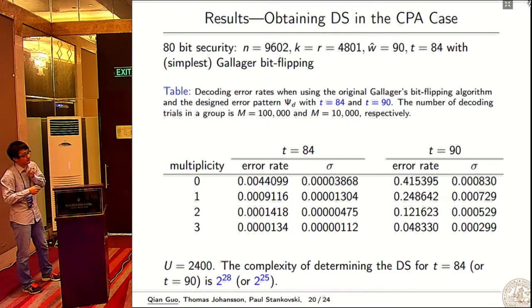In the CPA case, this is how to get the distance spectrum. We use Gallagher's bit flipping algorithm with error pattern psi_d, choosing t is 84 and t is 90. This is parameters for 80-bit security, and this is a case where we can inject more errors to do a fault attack. If we inject more errors, we require less number of trials. The complexity in this case for t=84 is 2^28, and for t=90 is 2^25.